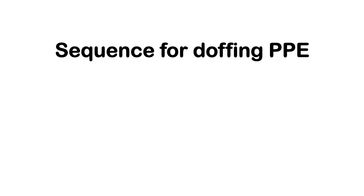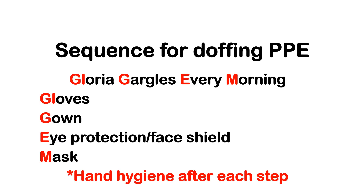What is the sequence for doffing or removing PPE? There are variations in the recommended sequence, but this is what is recommended by the Centers for Disease Control. Remember the mnemonic: Gloria gargles every morning. So remove the gloves first, followed by the gown, then eye protection or face shield, and finally the mask. Take note: hand hygiene is done after each step.